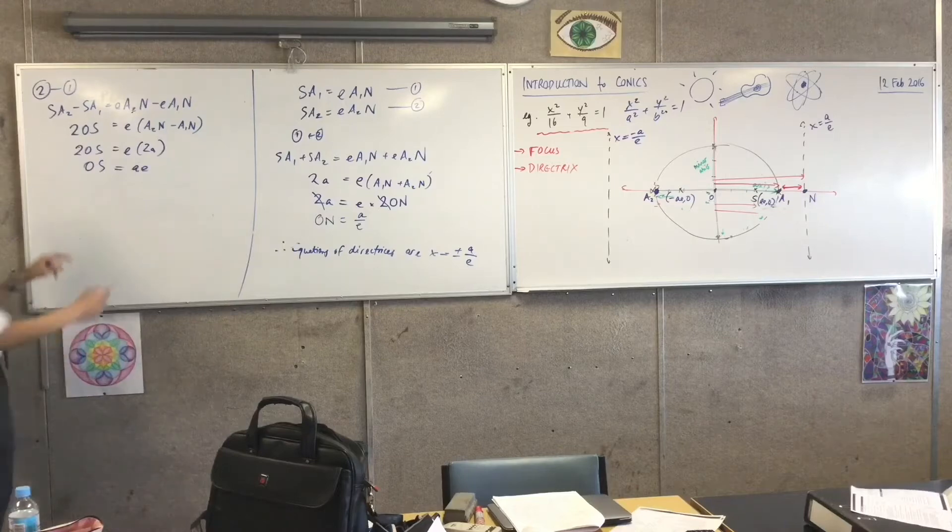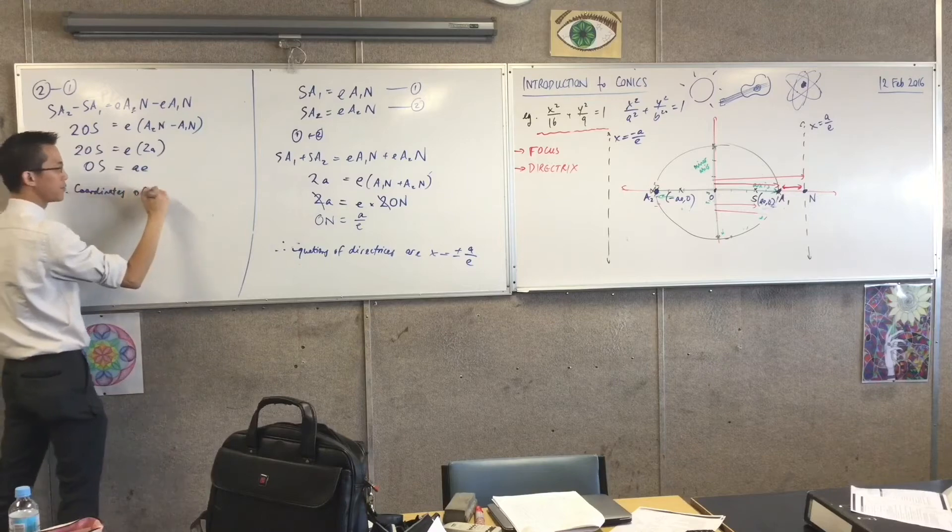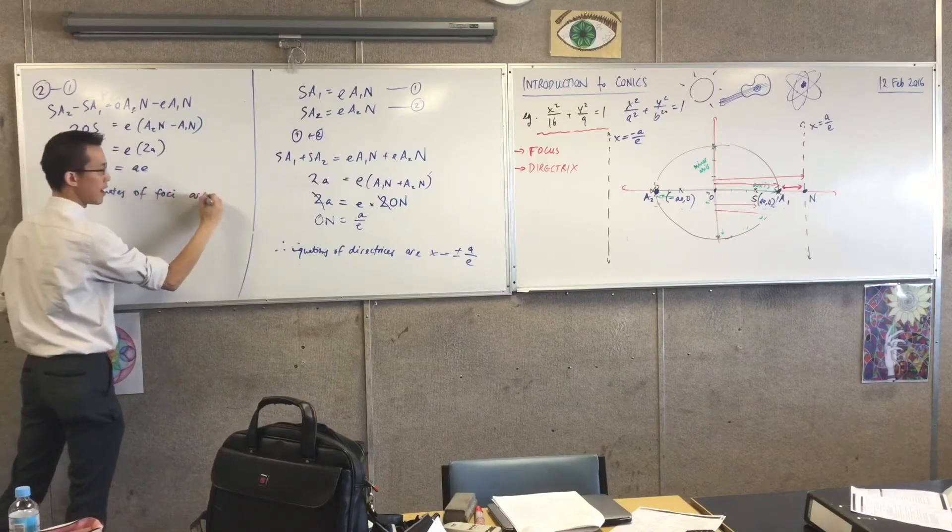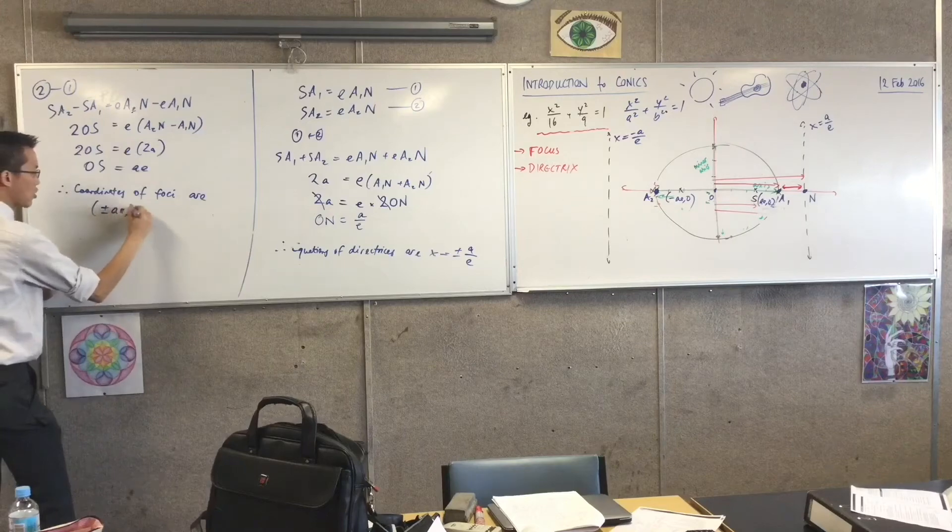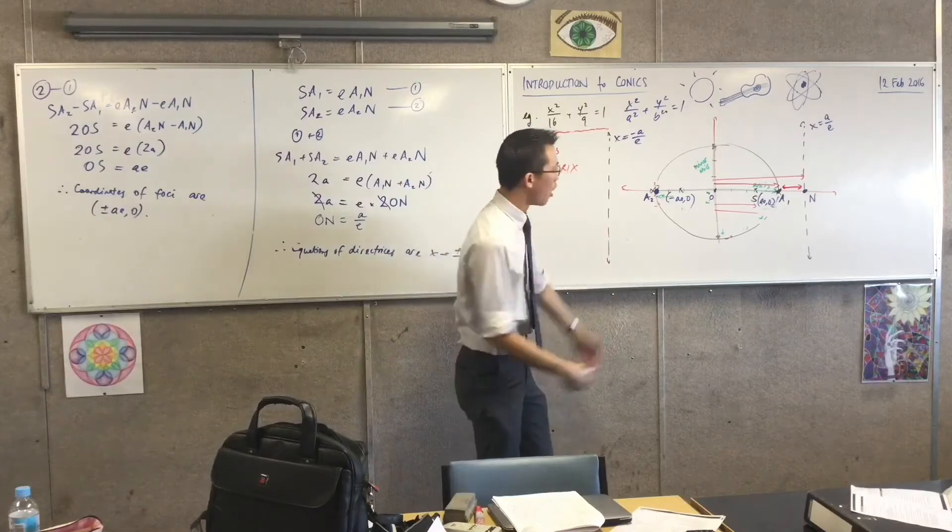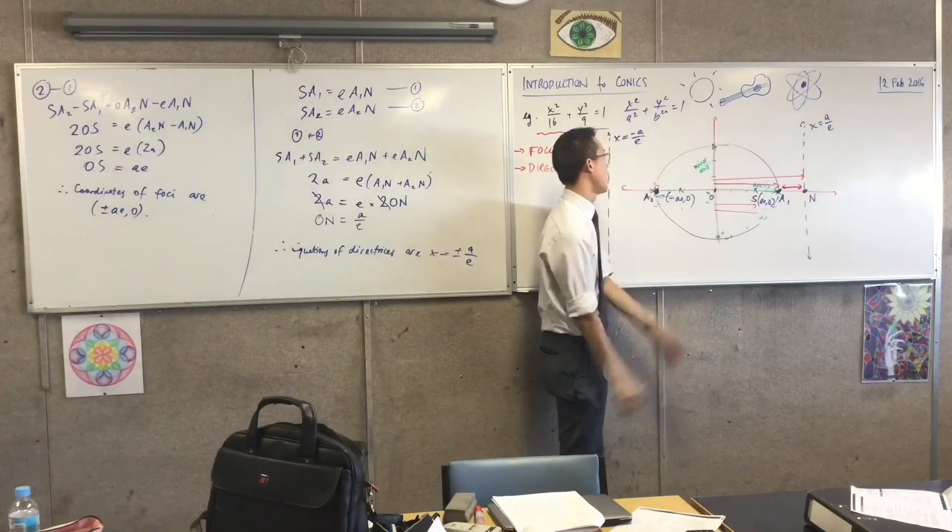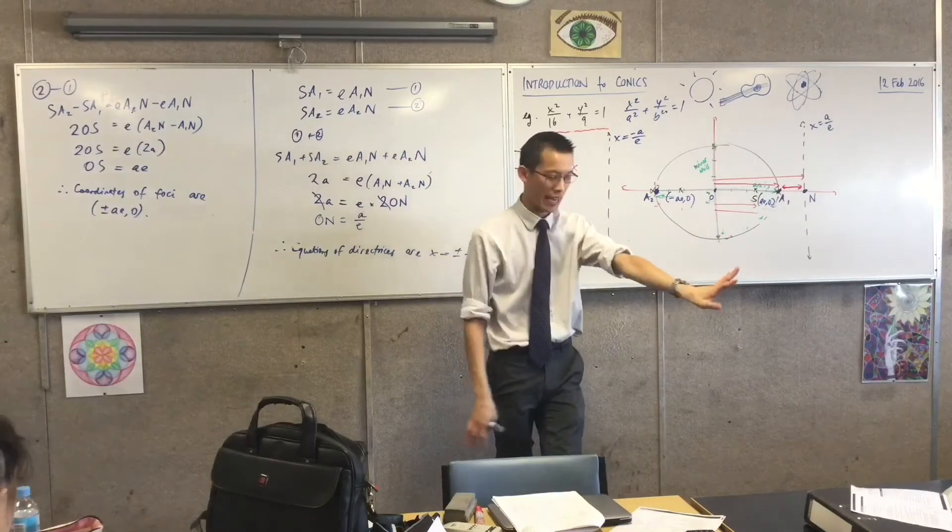Okay, right, so, therefore, coordinates of foci are plus or minus AE, comma, 0. Does that make sense? Assuming, of course, we're, like, center at the origin, obviously, if we were to shift up somewhere else, the equations, we'd have to do a corresponding translation, but that's fine. We'll deal with that case later on.